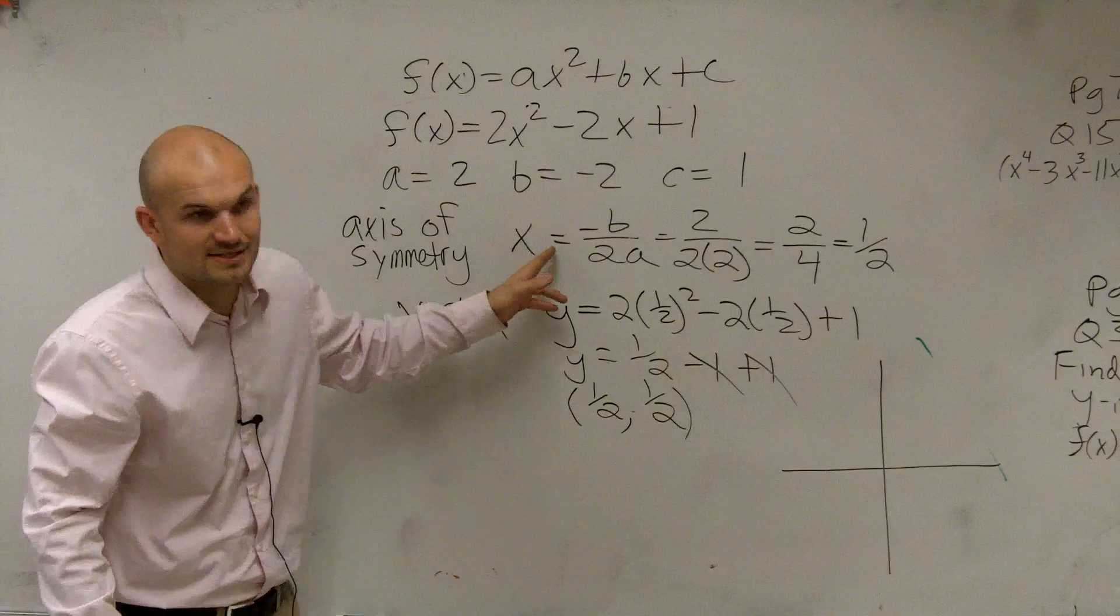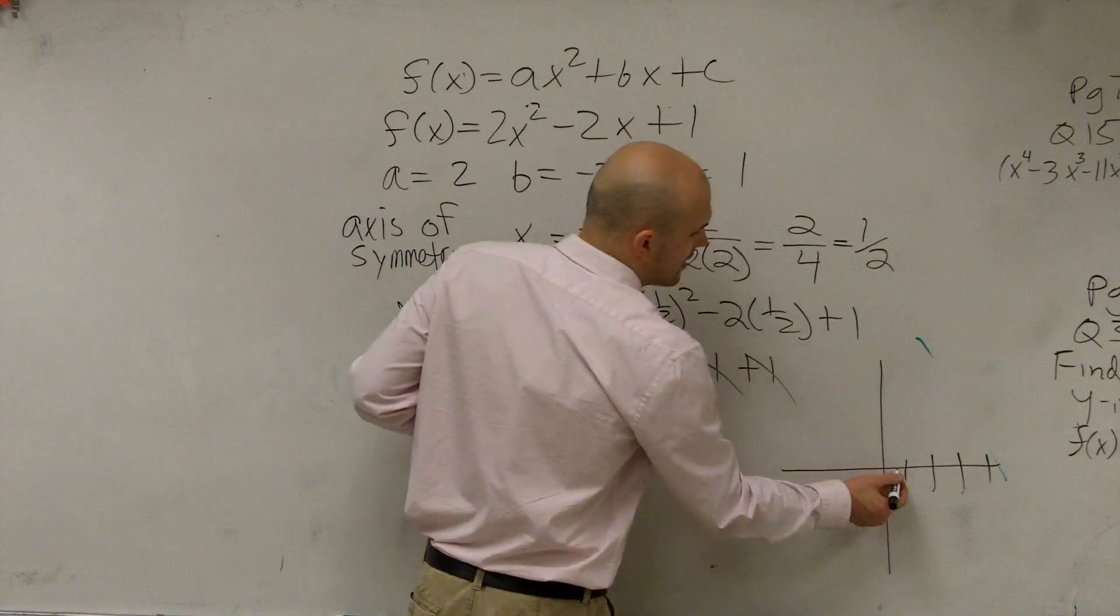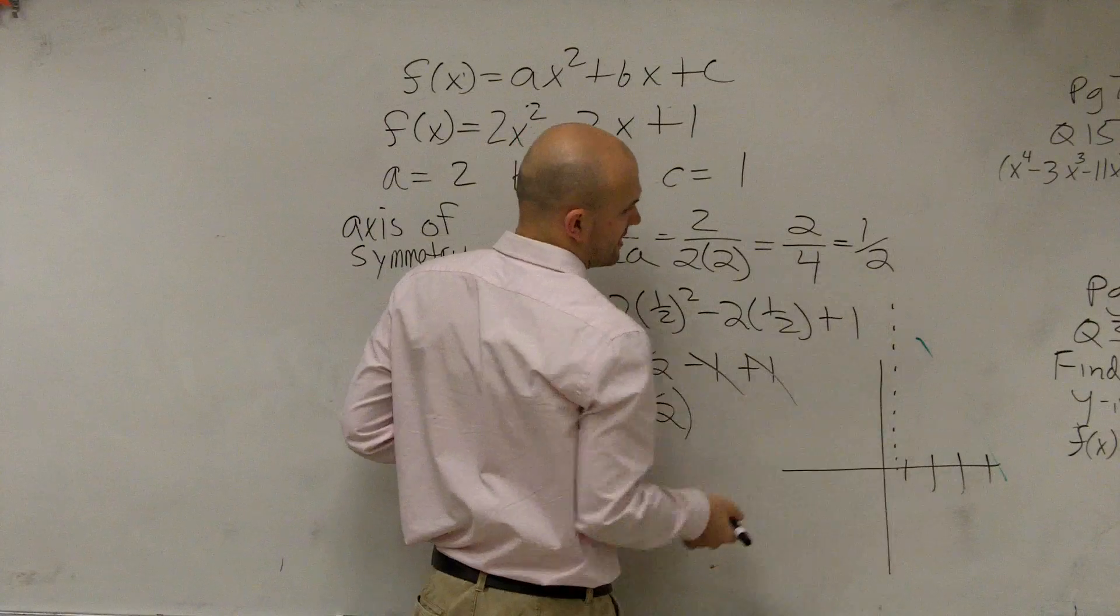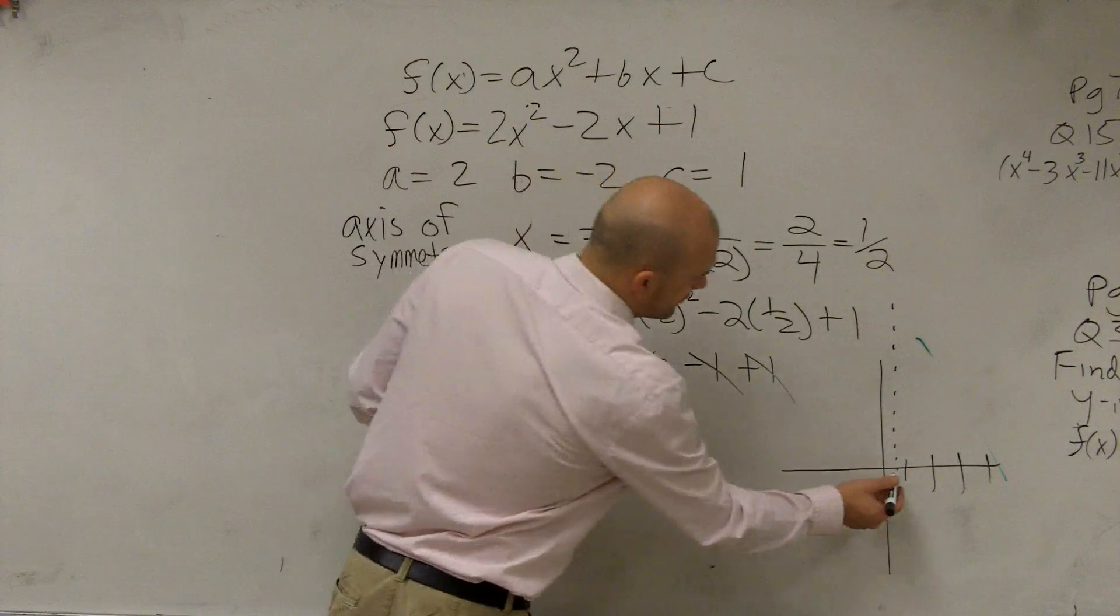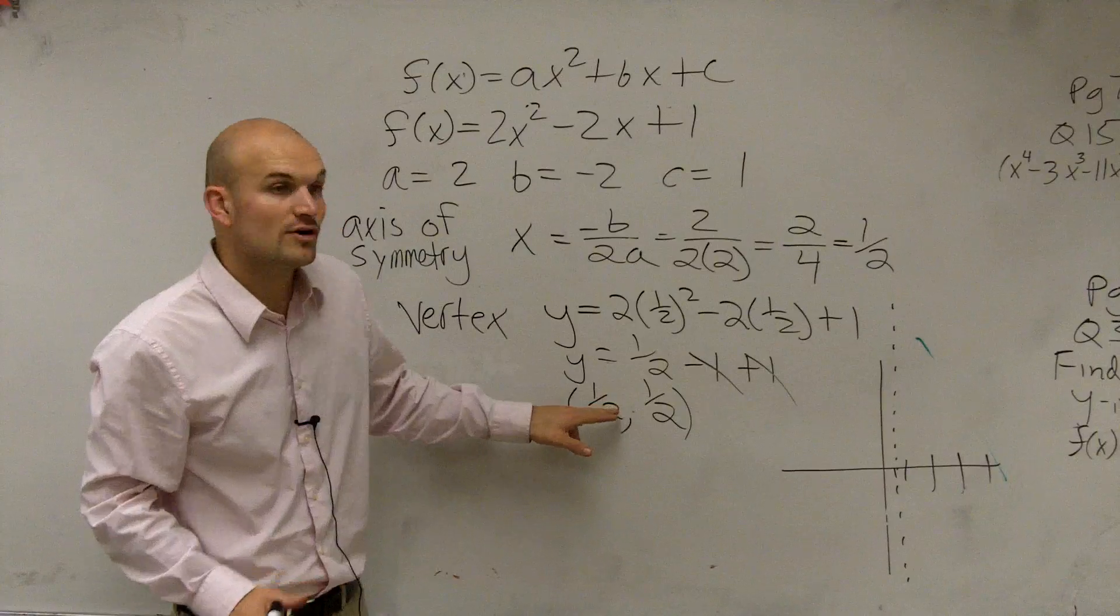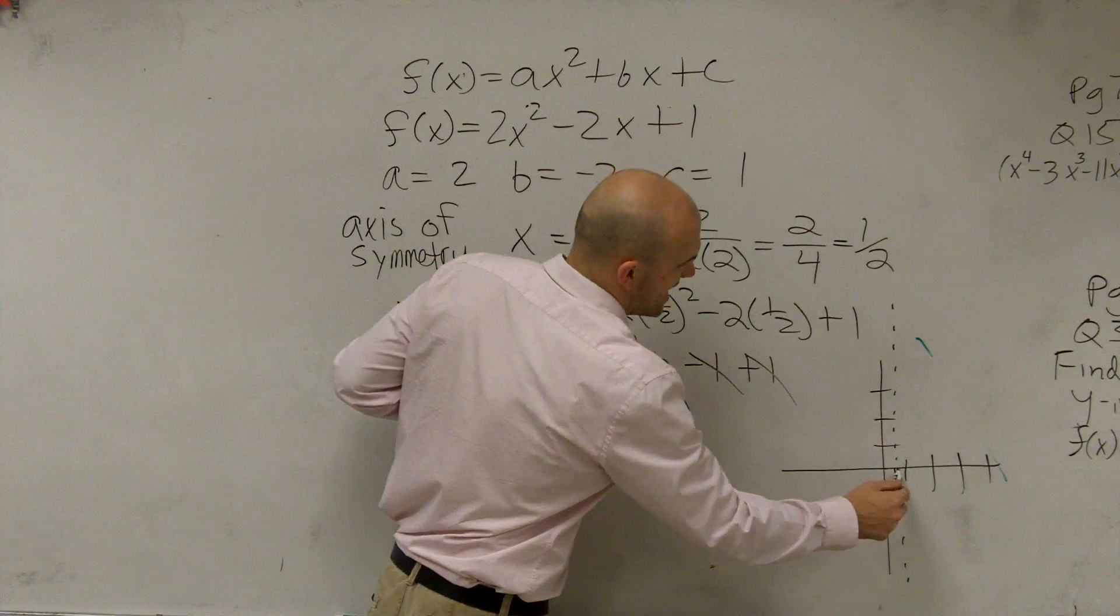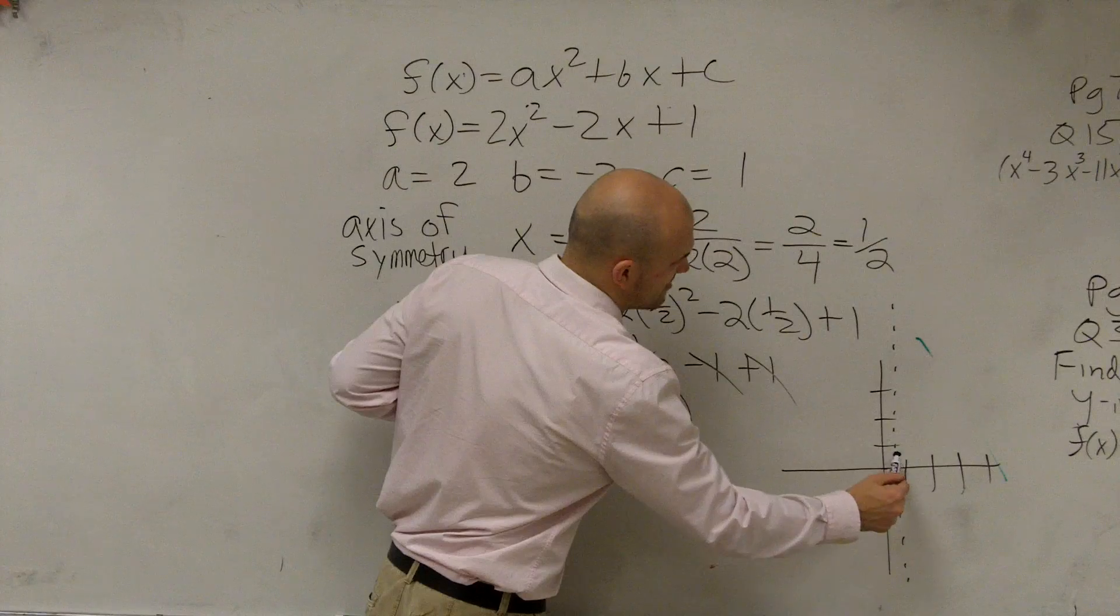First of all, we know axis of symmetry is at 1 half. So if it adheres 1, 2, 3, 4, axis of symmetry is going to be right there. Down at negative 1 half. I'm sorry, at positive 1 half. Then our vertex is at 1 half, 1 half. So it's at 1 half, up 1 half. So that's going to be my vertex.